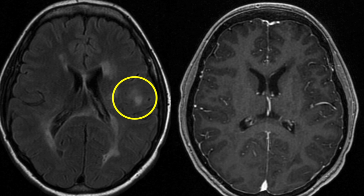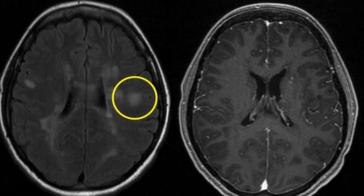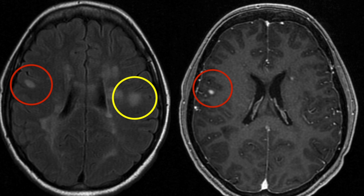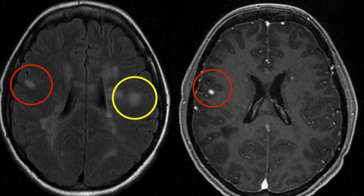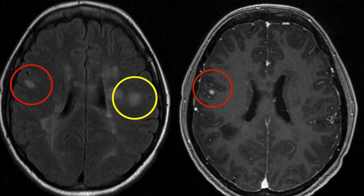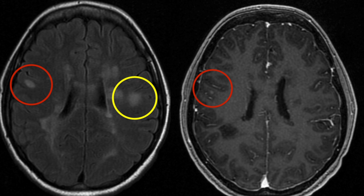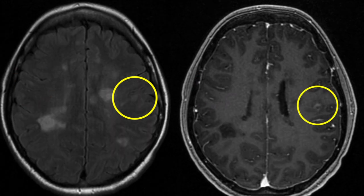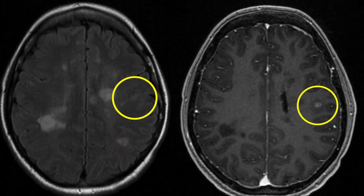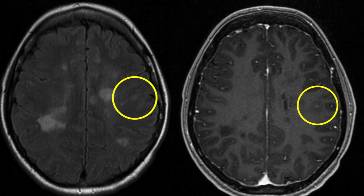As we scroll up a little farther we see two lesions — one circled in red and the other circled in yellow. When you look at the post-contrast sequence you can see that they both take up abnormal contrast. This tells us that both of these lesions are new and active.